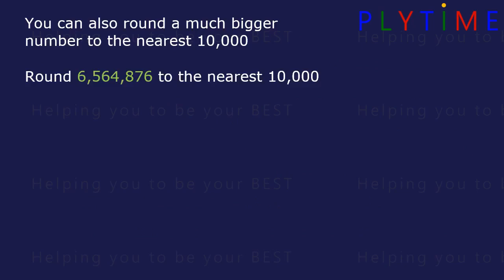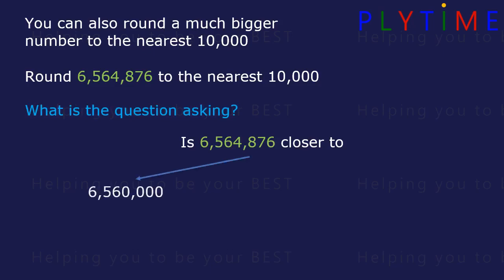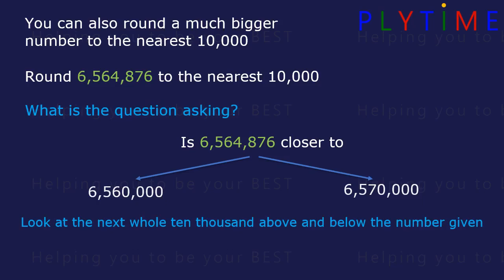Round this number to the nearest 10,000. What's the question asking us to do? Is 6,564,876 closer to 6,560,000 or 6,570,000? Look at the next whole 10,000s above and below the number that's given.